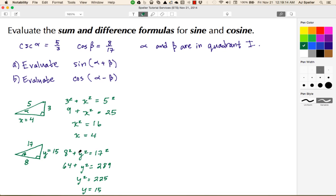Now let's work on part A. Let's switch colors to keep everything separate. To work with A, we have sine of alpha plus beta, so we're going to follow our sum formula for sine. That formula is sine alpha cosine beta plus cosine alpha sine beta.